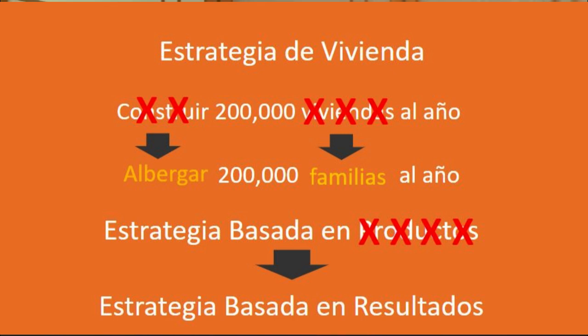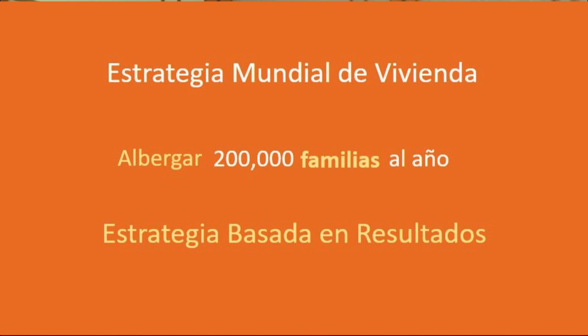Many countries and cities have housing strategies, and these are usually focused on building a number of housing units — let's say 200,000 over five years or 200,000 per year. This is what we call an output-based strategy. In fact, the strategy should be to house a number of households per year, so that it becomes a result-based strategy.